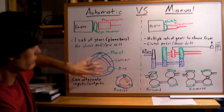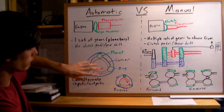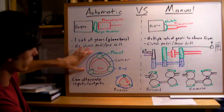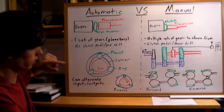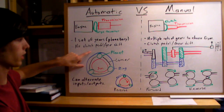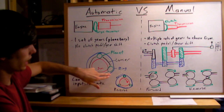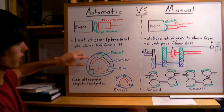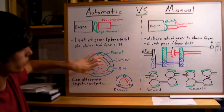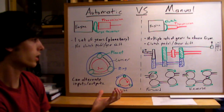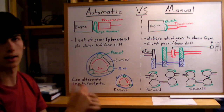In a planetary gearbox, through a system of clutches and bands, you can change which component is driven and which is driving. For example, you can have the engine driving the sun gear with the output going to the wheels via the ring gear, or you can reverse it — engine driving the ring gear with output from the sun gear. By manipulating which is driven and which is driving, you change gear ratios. With two of these sets back to back you can achieve four forward gears and a reverse gear.